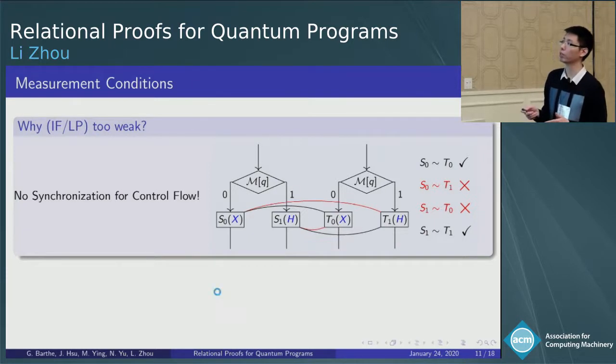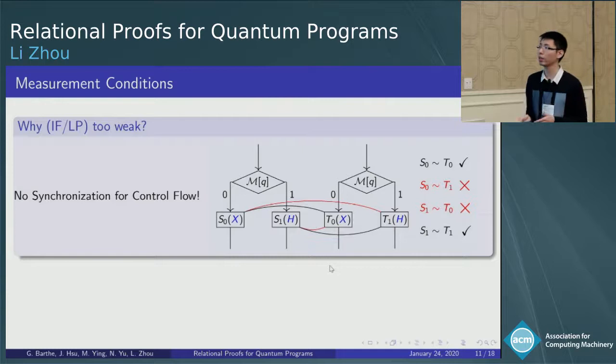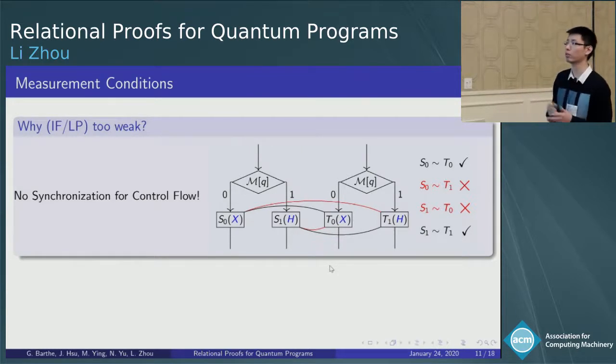For example, if we compare two if statements, we need to compare all the branches S0, T0, S1, T1, and also S0, T1, and S1, T0. Consider the sub-programs labeled by blue color here, the X gate and the H gate. Obviously, the sub-program S0 is the same as T0 and S1 the same as T1, but these two comparisons are strong. However, for the cross-comparison between S0, T1, and S1, T0, the X gate and the H gate are quite different. So these two comparisons are weak, and this will significantly weaken the whole if rule.